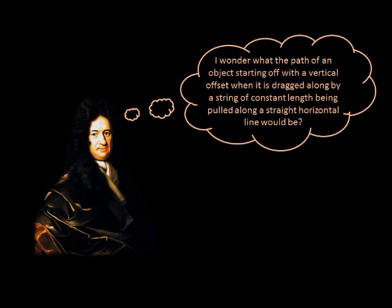In the late 17th century, mathematicians were pondering a problem posed by Claude Perrault. What is the path of an object, starting off with a vertical offset, when it is dragged along by a string of constant length being pulled along a straight horizontal line?